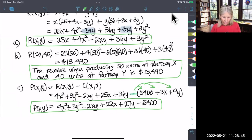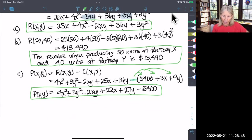If you took your revenue function and subtracted the cost function—making sure to distribute the negative across the entire cost function—then combined like terms, you should get this profit function: P(X,Y) = 4X² + 3Y² - 2XY + 22X + 27Y - 5400. We combined the X terms and Y terms accordingly.